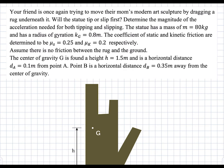In this question, we're dragging a modern art sculpture by a rug and we're asked whether the sculpture is going to tip or slip first. We're given all of the coefficients of friction — static and kinetic — the mass, and the radius of gyration.